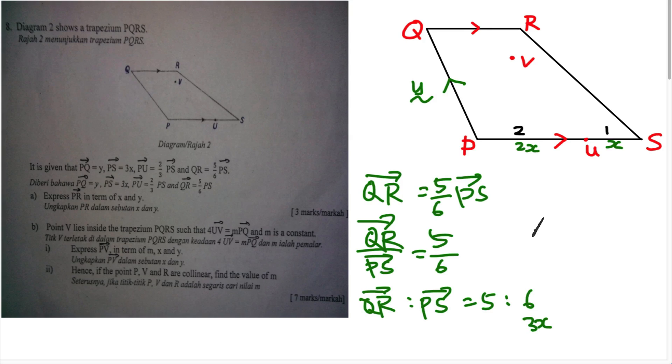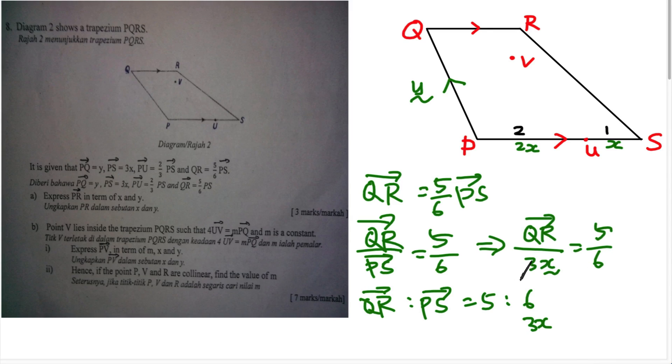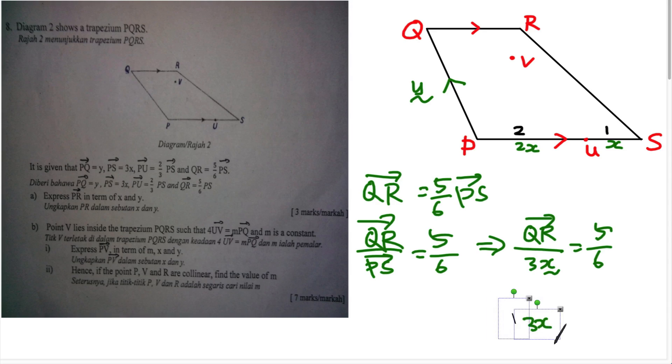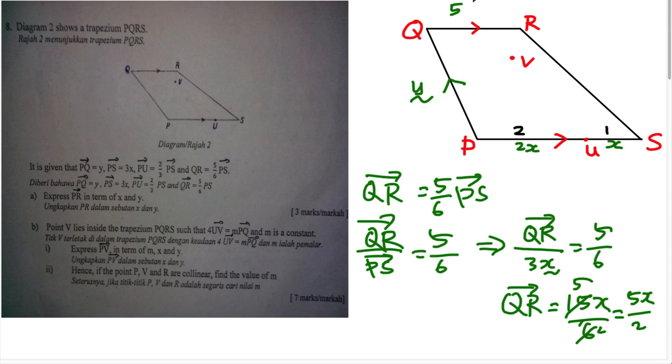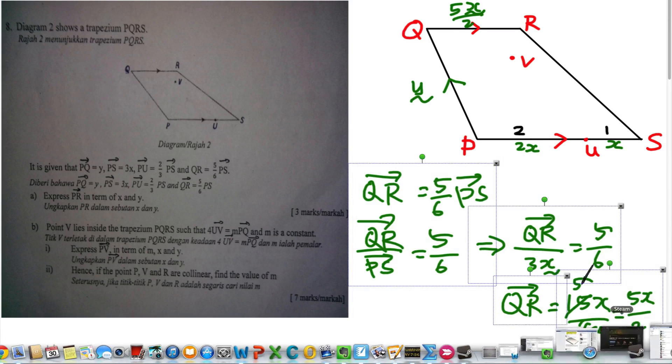Substituting PS = 3x: QR over 3x equals 5/6. Moving 3x to the other side gives QR = 15x/6. Simplifying by dividing by 3 gives QR = 5x/2.